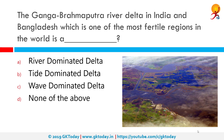The Ganga-Brahmaputra river delta in India and Bangladesh, which is one of the most fertile regions in the world, is a tide-dominated delta. A tide-dominated delta is caused by erosion as the important controlling factor. It is mainly submarine with prominent sandbars and ridges. This tends to produce a dendritic — that is, a Y-shaped — structure formed by the main river and its tributaries.